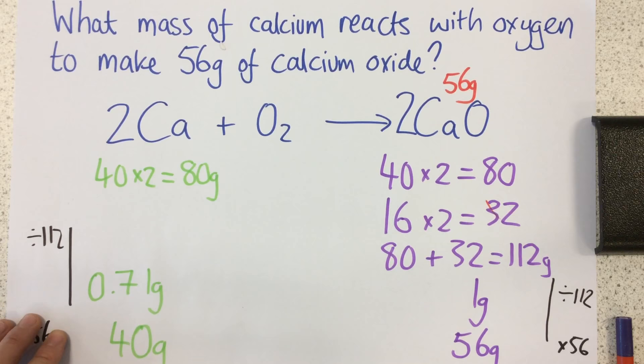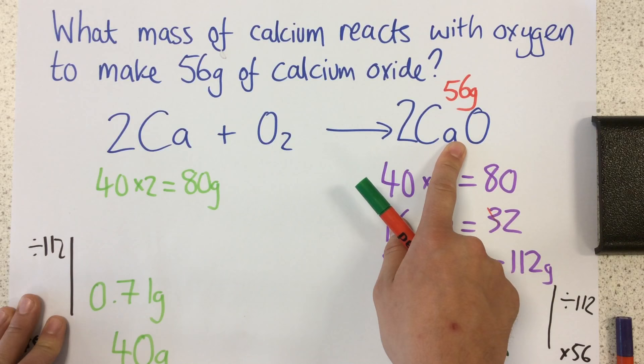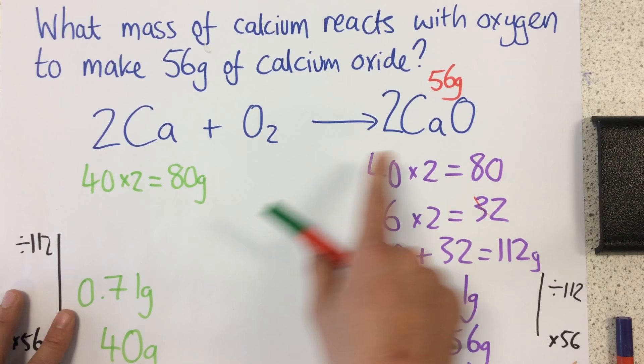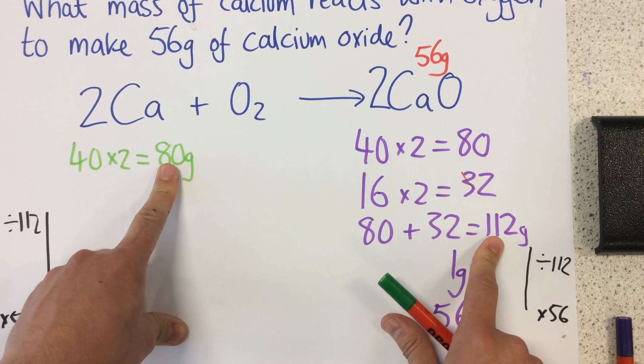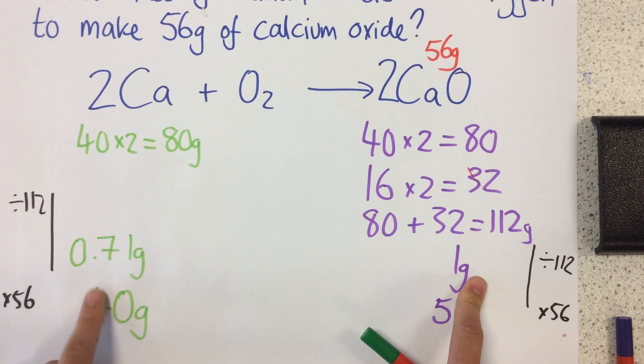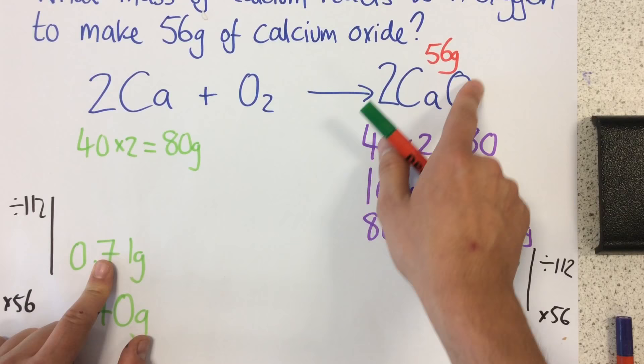Remember the order of events: first of all, write a balanced equation. What we've then got to do is find the relative formula mass of the different things we're looking at. Then, what we've got to do is see how much of this we'd need for just one gram by dividing by the relative formula mass of the thing that we're looking for. Then what we need to do is multiply it by the mass that we're looking for. If you follow these steps, you should be all right. Thank you very much.